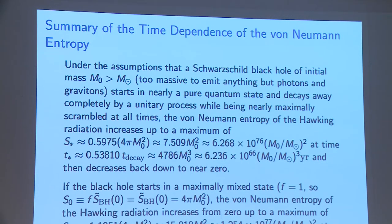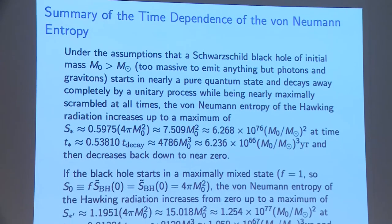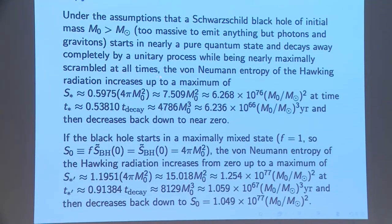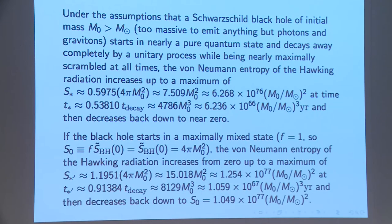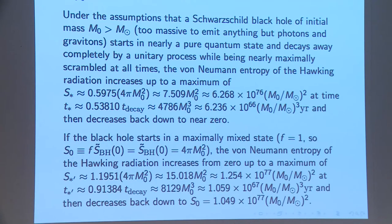Assuming a Schwarzschild black hole of initial mass much larger than solar mass — large enough to emit only photons and gravitons — starting in a nearly pure quantum state and decaying completely by a unitary process while being nearly maximally scrambled at all times: the von Neumann entropy increases to a maximum at T-star, then decreases back to near zero. If you start with a maximally mixed state instead, the von Neumann entropy of the Hawking radiation increases from zero to a maximum about 20% more than the initial Bekenstein-Hawking entropy, then returns to it.